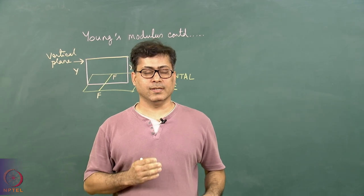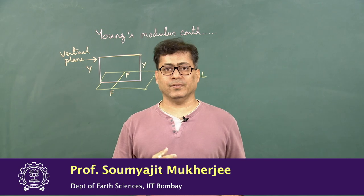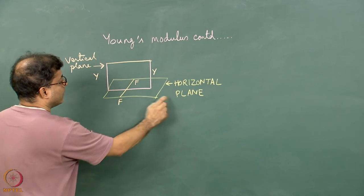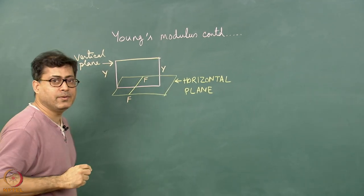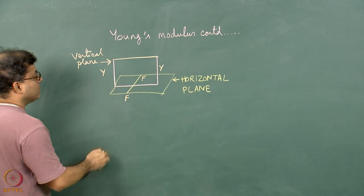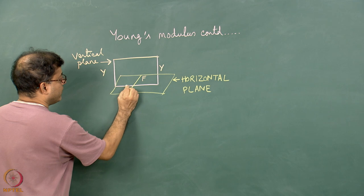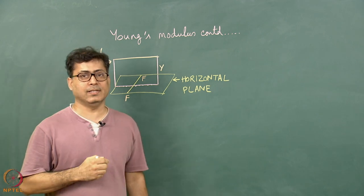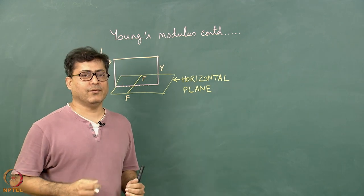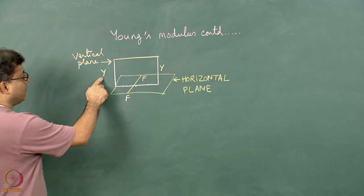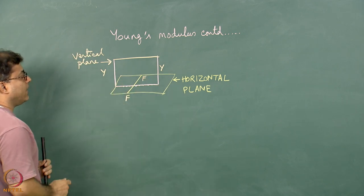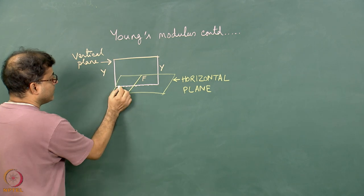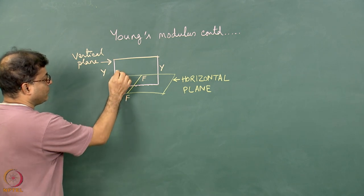Let us look at how the Young's modulus, or the strength of the rock, varies across a fault zone. Imagine this yellow plane is a horizontal plane and FF represents a fault that has been mapped by a geologist. Across the fault, rock samples have been picked up from the surface and sent to the laboratory for stress-strain testing to find out the Young's modulus. Y is written here instead of E for Young's modulus, and if I plot the Young's modulus along this vertical plane, this is going to be the plane for the graph.